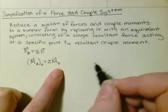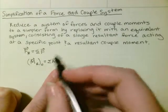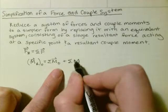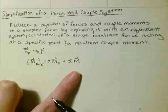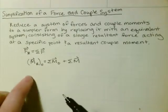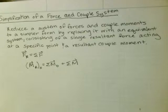That's the moment produced by your force about point O. Then you also have to add the couple moments, which are free vectors, so it doesn't matter that they're about point O. That's how you find your entire resultant moment.